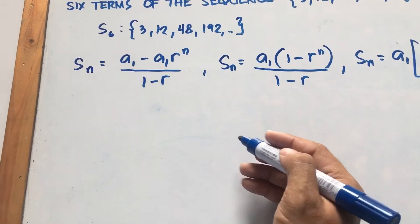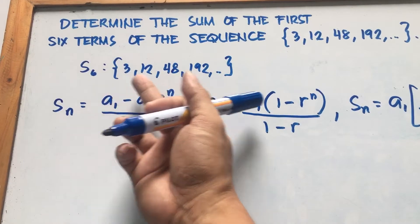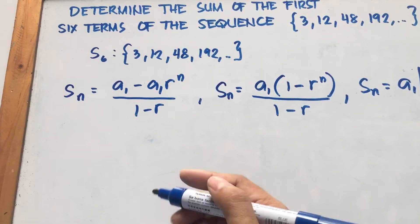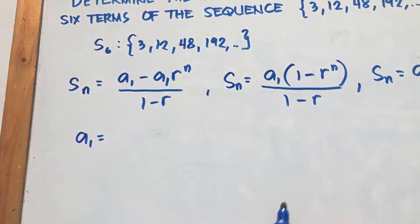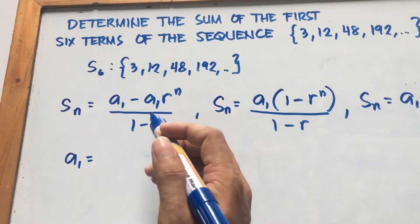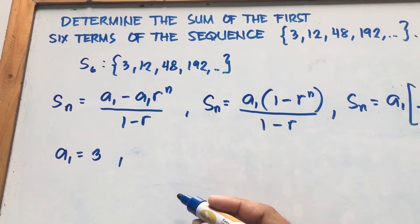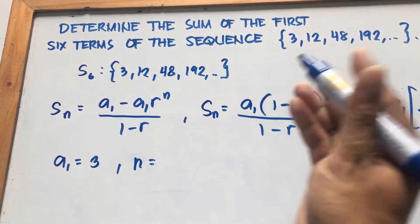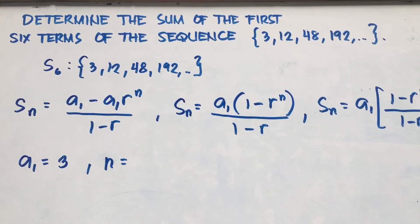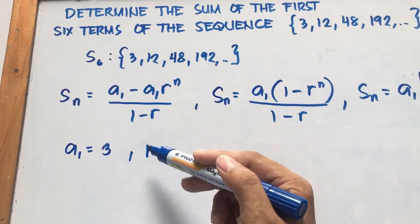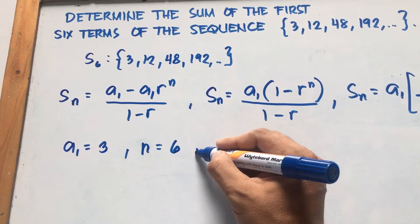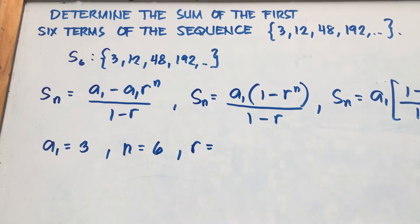We will use this formula to solve our problem. We are asked to find the sum of the six terms. First, we need to identify a sub 1, the first term. The first term of our given sequence is 3, so a sub 1 equals 3. The next step is to find n — how many terms we need to add. Since we need the sum of the first six terms, n equals 6.